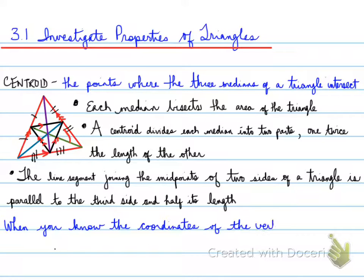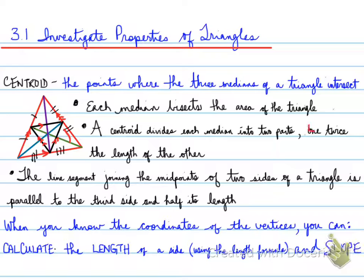When you know the coordinates of the vertices, you can calculate the length of a side using the length formula and the slope of a side. It is important in this whole unit that you calculate length and slope. Both length and slope play a significant part in geometric shapes.